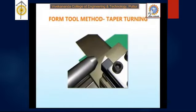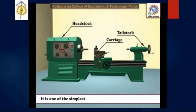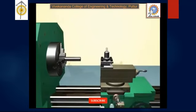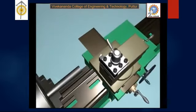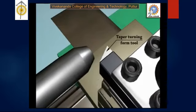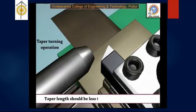For taper turning using the form tool method: a tool with the respective taper angle is fixed in the tool post, and by operating that tool against the rotating jaw, the respective angled cut is made. It is one of the simplest methods to produce a short taper. The workpiece is fixed in a three-jaw chuck, the tool is aligned with the axis, and at normal rotation speed the cut is performed, producing a conical shape.